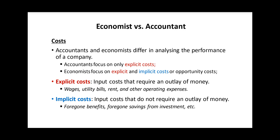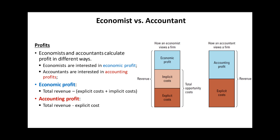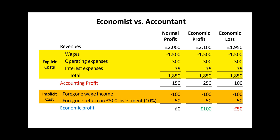Because implicit costs may be difficult to quantify, we don't usually record them for accounting purposes, and we usually roughly estimate them when we do economic analysis. Economists take into account explicit and implicit costs to calculate economic profit, while accountants are interested in accounting profits only, taking into account explicit costs — costs that require an outlay of money or cash. Economic profit is the difference between total revenue and total opportunity cost, which is the sum of explicit and implicit costs.